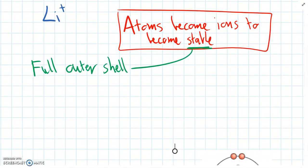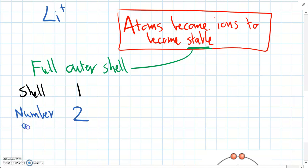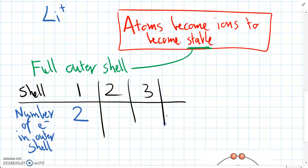So for the first shell, it can only hold two electrons. So if the first shell is the outer shell, it will hold two electrons. So we can say number of electrons in the outer shell. So the first shell can only hold two.